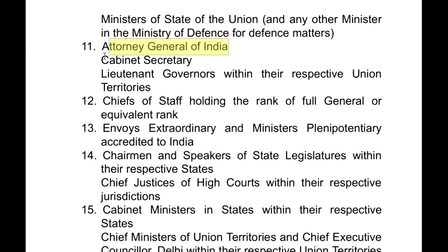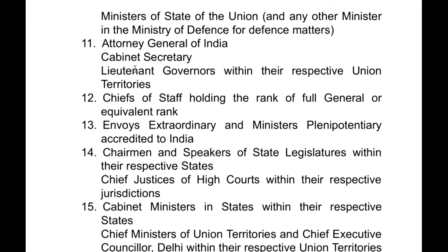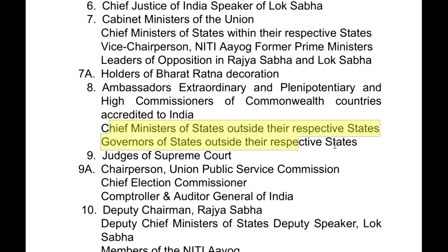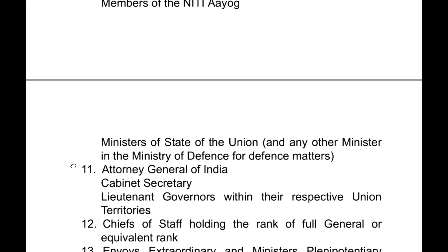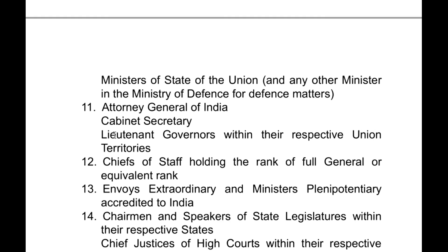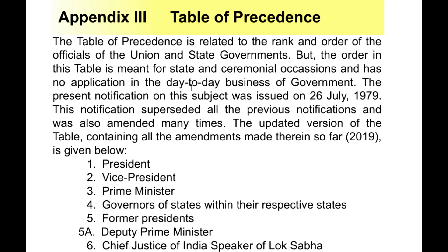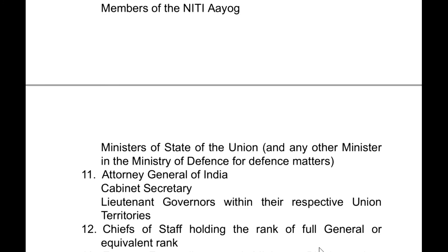Then at the 11th number come the attorney general of India, cabinet secretary, and lieutenant governors within their respective duties. Even though governors are at the 4th number within their state, and outside their states they fall to 8th, the lieutenant governors come down further. Watch this video again and again to remember the Table of Precedence. It's not easy to remember, but we can have familiarity with the topic and the ranks. So remember the top 10. Thank you.